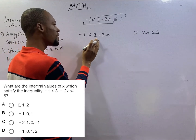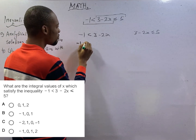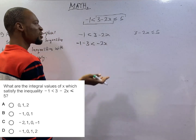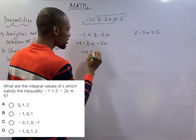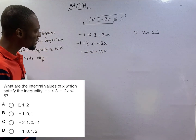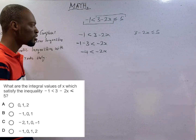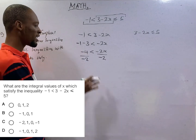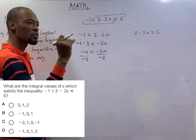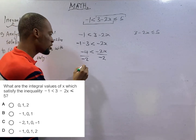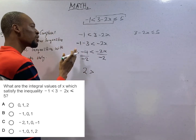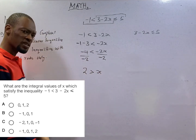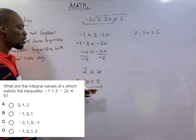For the first part: minus 1 is lesser than 3 minus 2S. Collecting like terms, minus 1 minus 3 is lesser than minus 2S, giving minus 4 is lesser than minus 2S. Dividing both sides by minus 2 — since we're dividing by a negative number, the sign changes from lesser than to greater than — we get 2 is greater than S, which means S is lesser than 2.